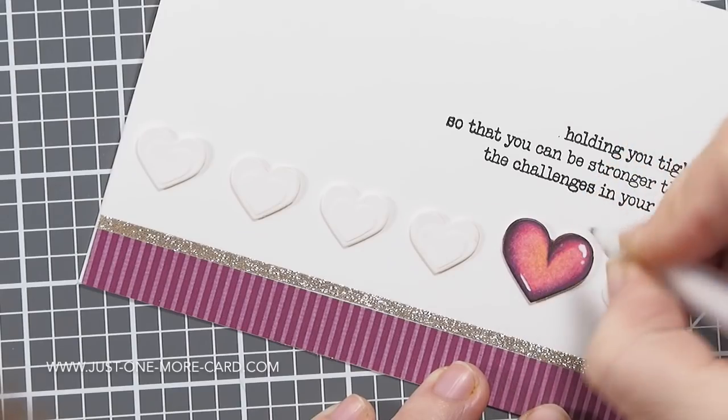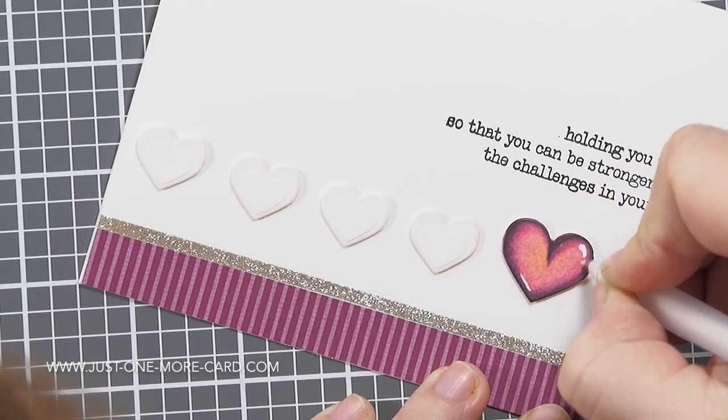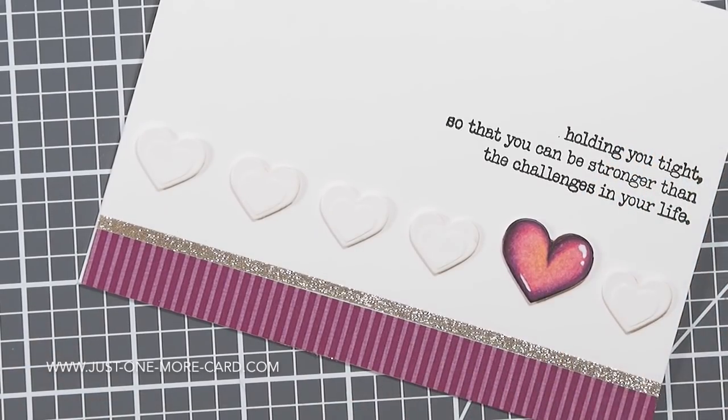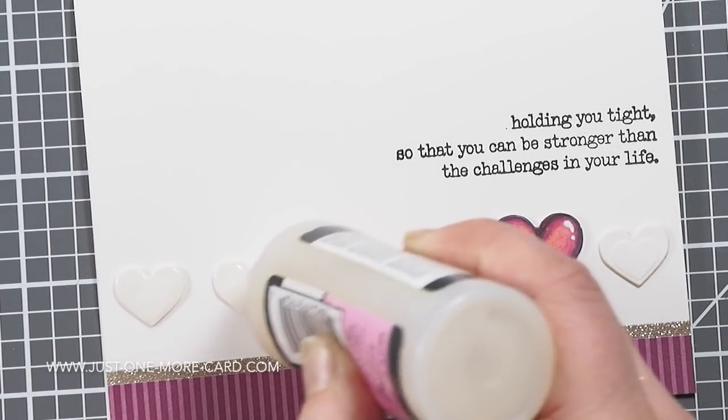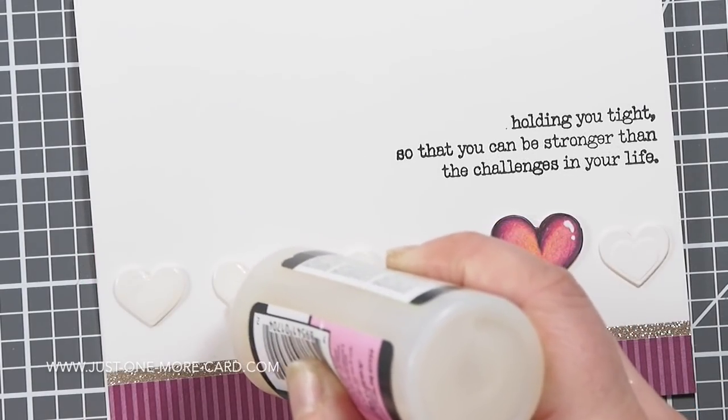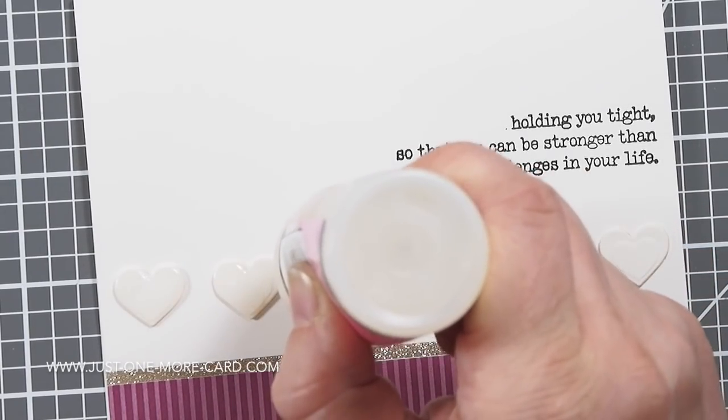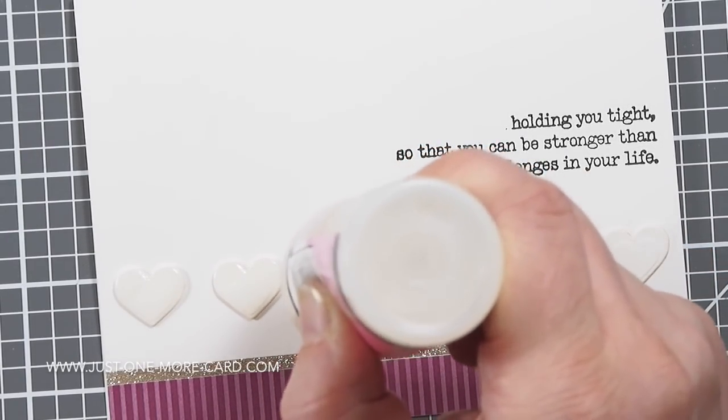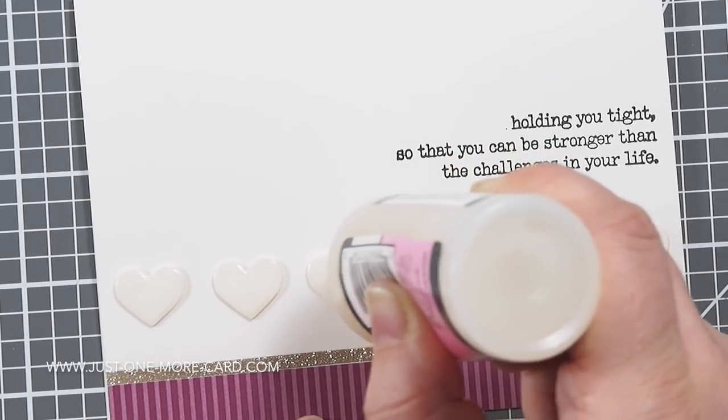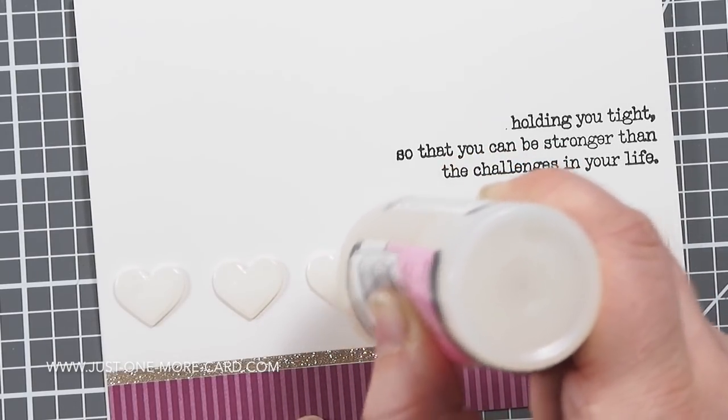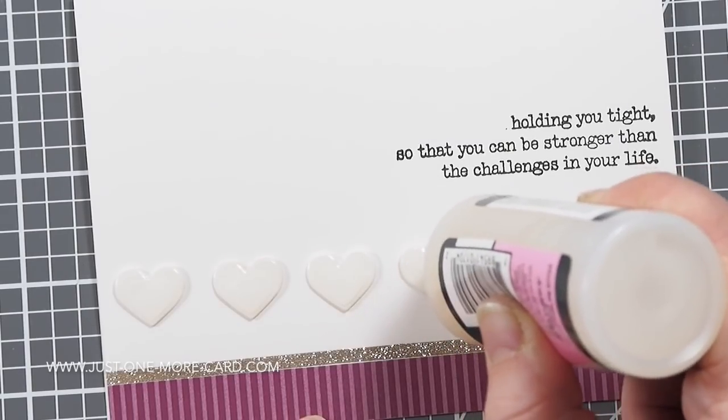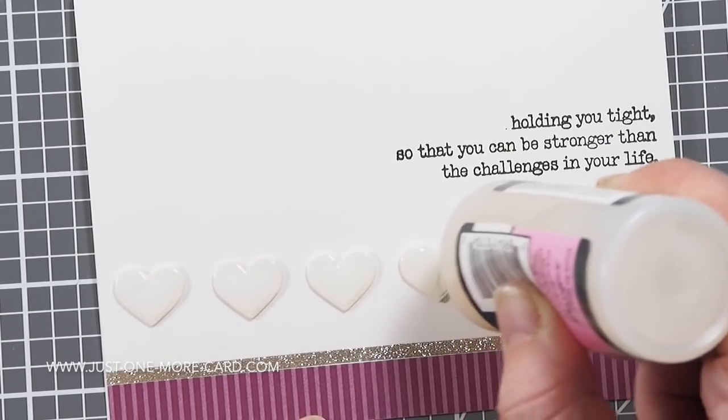I'm just enhancing the highlights here a little bit, and then I'm coming back with my glossy accents and I'm adhering them on top of each of the hearts. I'm doing the purple heart last for the simple reason that I wanted to give the white gel pen some time to dry, because I didn't want it to run underneath the glossy accents.